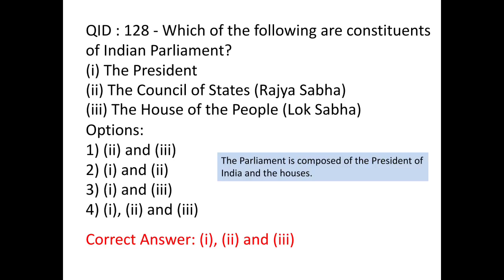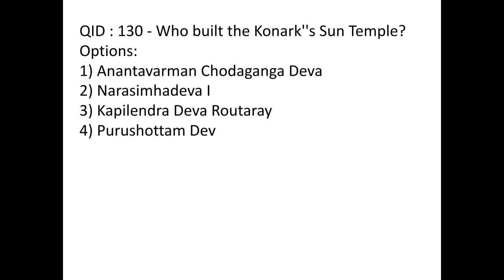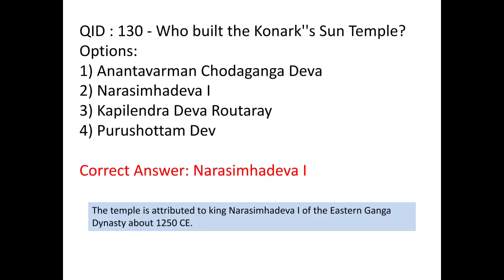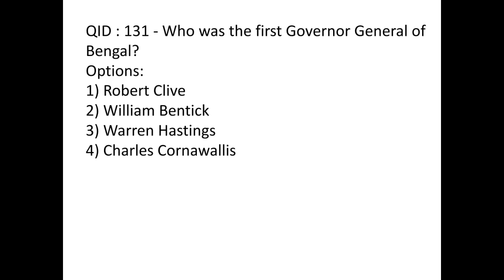The next question is about the Konark Sun Temple, which was built by King Narasimha Deva I. You have to remember this is a Sun Temple named after King Narasimha Deva. The next question asks: who was the first Governor General of Bengal?